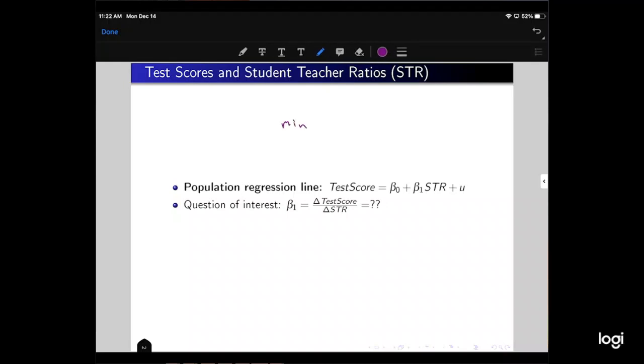When we were talking about how this works, we're minimizing over beta hat 0 and beta hat 1 the function of the sum of i equals 1 to n of ui hat squared. So the ordinary least squares, the least part is the minimization, and the squares part is the squared.